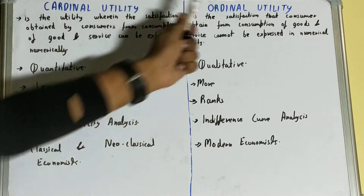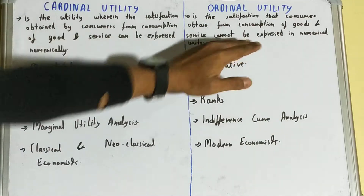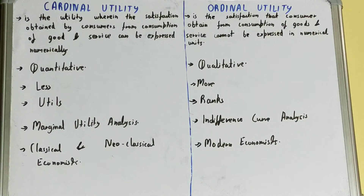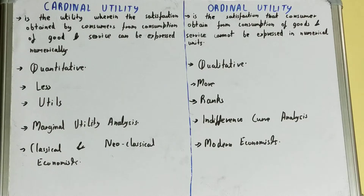Ordinal utility is the satisfaction that the consumer obtains from the consumption of goods and services that cannot be expressed in numerical units. It is a kind of satisfaction the consumer gets from consumption of goods and services, but it is not possible to express it numerically.